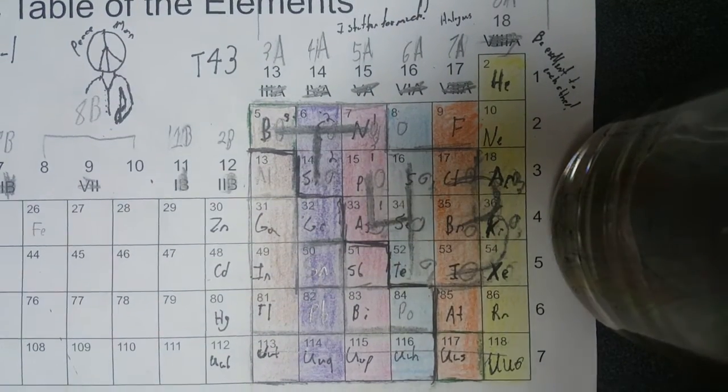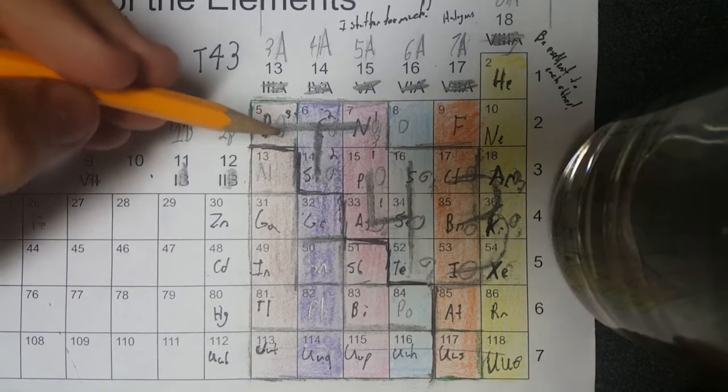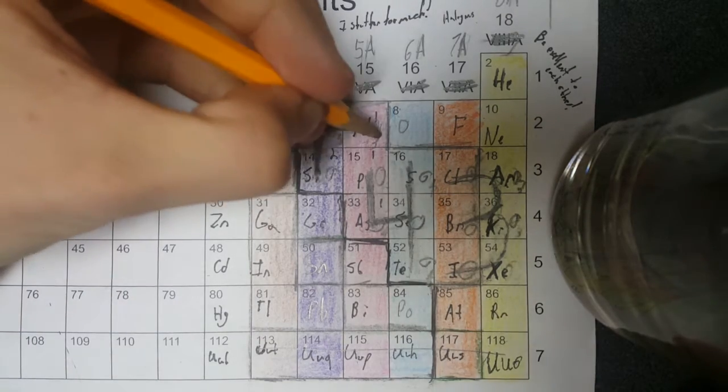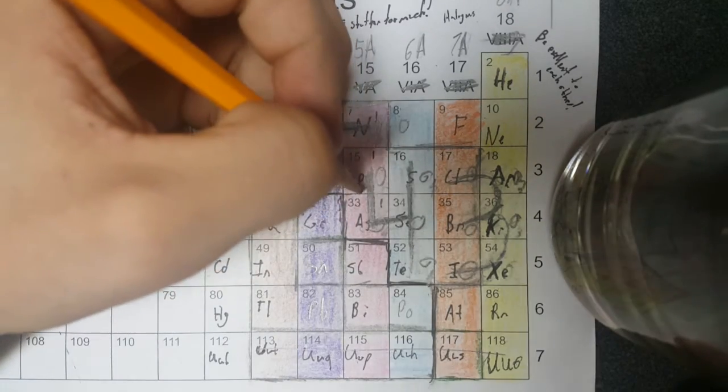How many oxygen atoms are in each polyatomic ion? The T43 method will help you figure that out. T is for three. That corresponds to the amount of oxygen atoms. Everything in the T has three oxygen atoms.